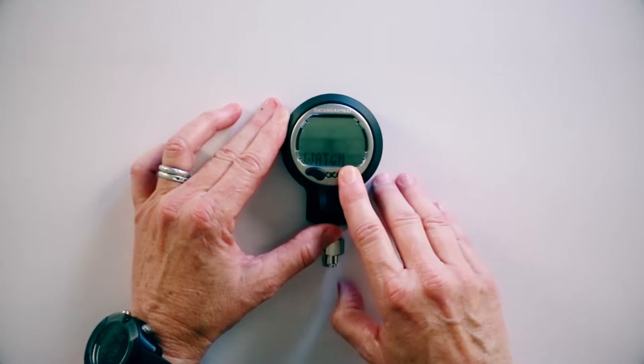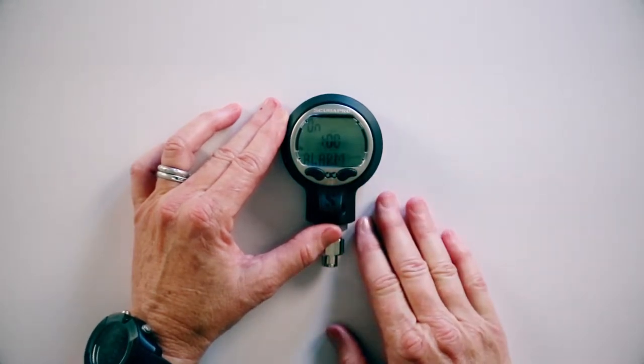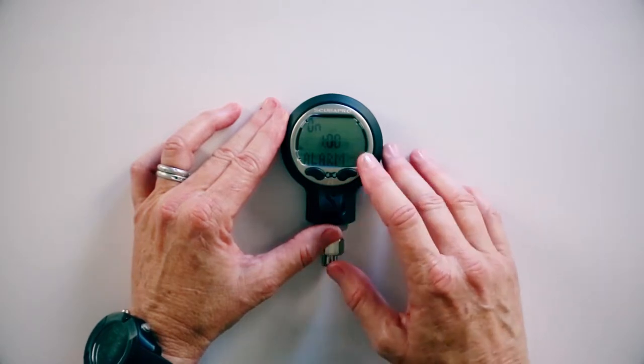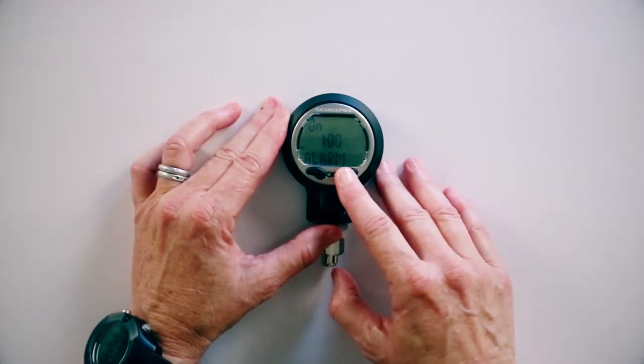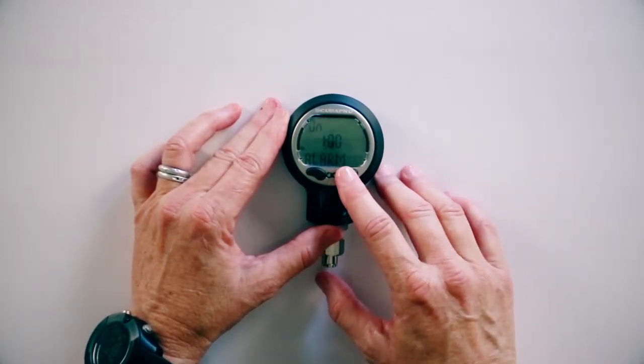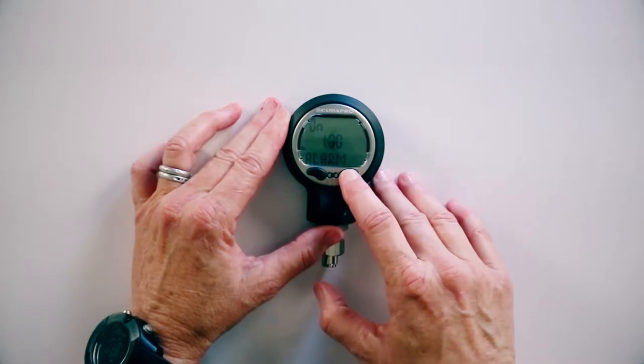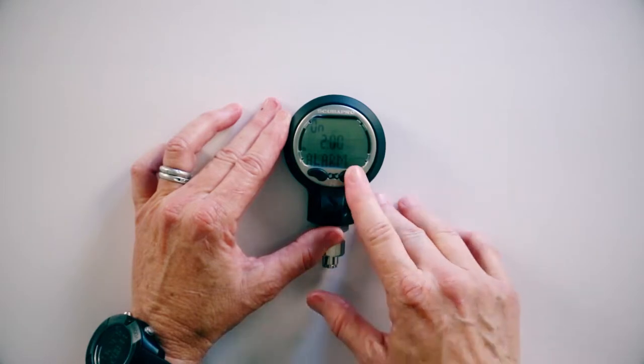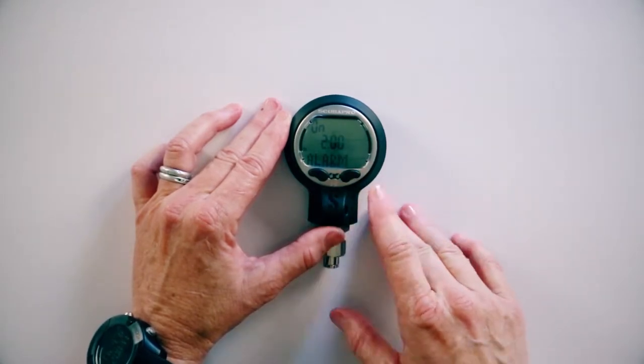To get into the watch, we're going to push and hold the right button. There's an alarm. You can use this as an alarm, so we're going to set this alarm and set it for two. Then push and hold and set it.